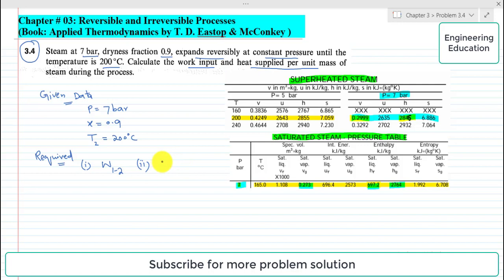So first of all, at 7 bar with dryness fraction 0.9, we will check the properties from the saturated steam pressure tables. If we visit the saturated steam pressure table, at 7 bar we have some properties.